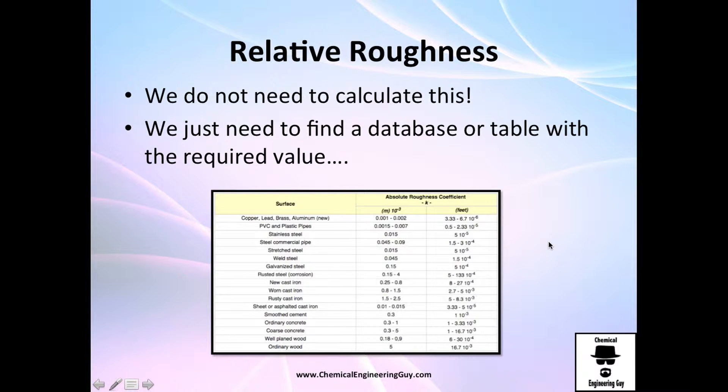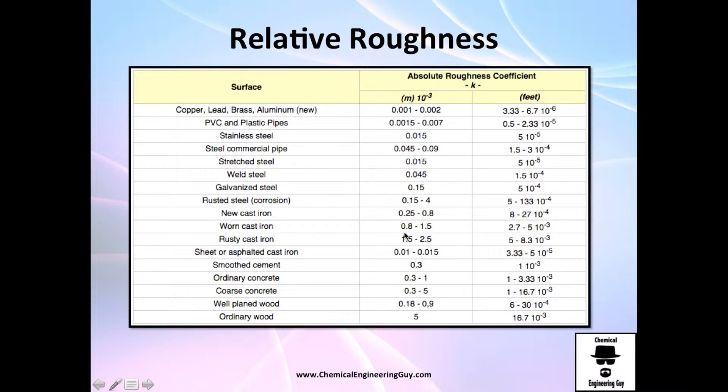Bring you a little bit more. We don't need to calculate these. Everything is already on the textbooks or the booklet or even internet. We just need to find that database or table and search for material, for example, steel, commercial steel. I would recommend you to stop and analyze each of them. For example, copper is very smooth compared to steel. Rustic cast iron is very rough compared to new cast iron, of course, and wood.